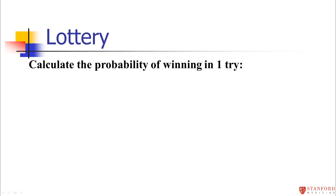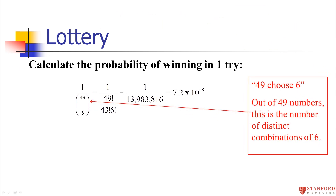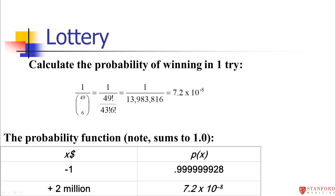We calculated the probability of winning last week. For this particular lottery there are 49 numbers, so there are 49-choose-6 possible combinations — that turns out to be about 14 million. So your chance of winning with one ticket is 1 in 14 million. We can think of this as a probability distribution with two possible outcomes: you either win or you lose. The probability of losing a dollar is 0.9999999928, and the probability of winning $2 million is 7.2 × 10⁻⁸. We can use that probability function to calculate an expected value.